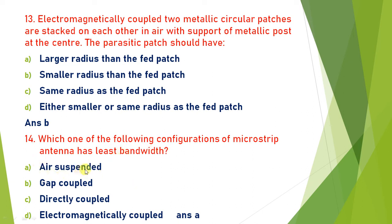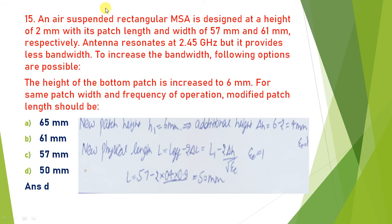Which configuration of microstrip antenna has the least bandwidth? Air suspended microstrip antenna generally has lower bandwidth compared to gap coupled, directly coupled, or electromagnetically coupled configurations. So the answer is A.